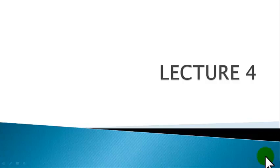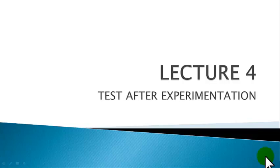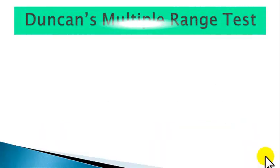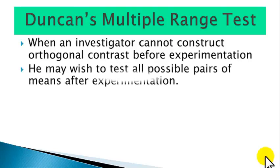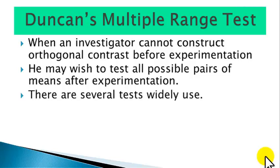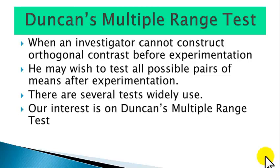Lecture 4 of Single Factor Experiment. In this lecture we shall be dealing with the test after experimentation: Duncan's multiple range test. When an investigator cannot construct orthogonal contrasts before experimentation, he may wish to test all possible pairs of means after experimentation. There are several tests widely used, but our interest here is on Duncan's multiple range test.